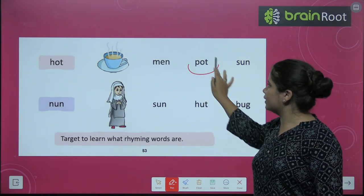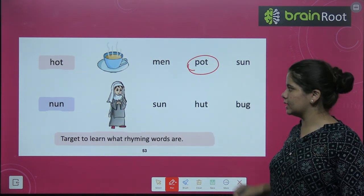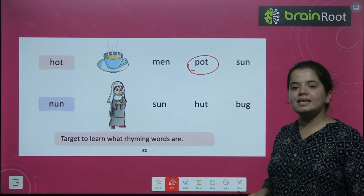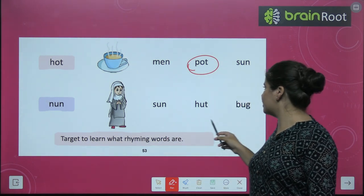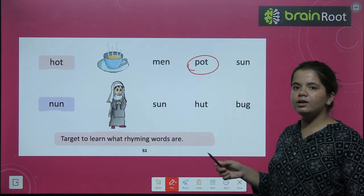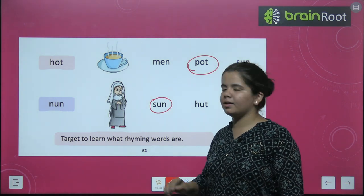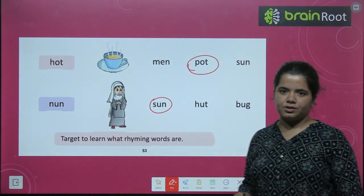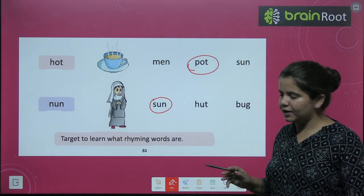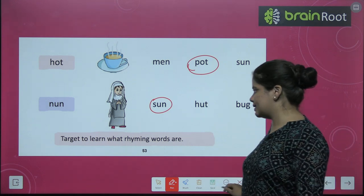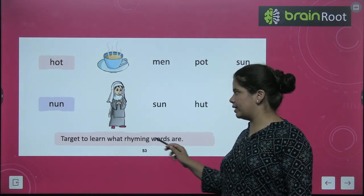So we circled 'sat'. Hot — hot's rhyming word is pot. Next is 'none' — none's rhyming word will be sun. Very good — none's rhyming word is sun. Is it okay everyone? Is it clear? Very good.